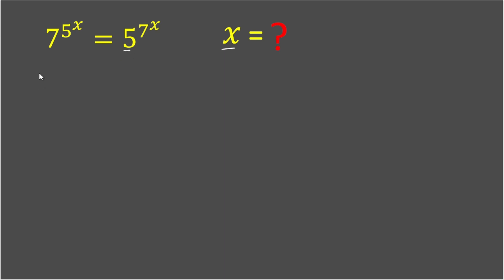First of all, we'll take log both sides with base 5. So our equation will be log base 5 of 7 to the power of 5x, and that is equal to log base 5 of 5 to the power of 7x on the right-hand side.